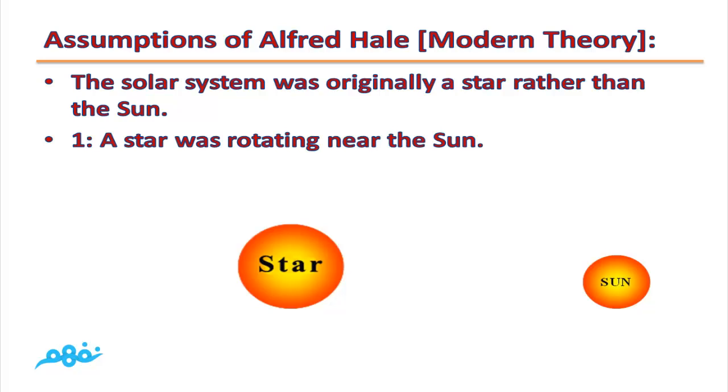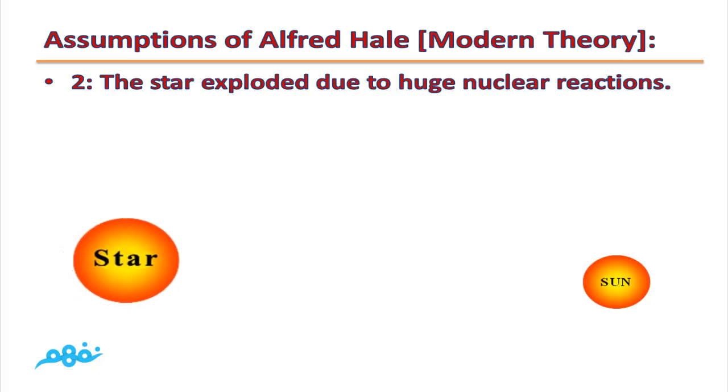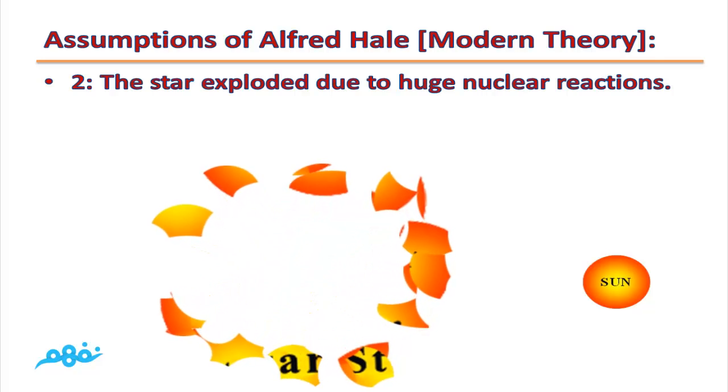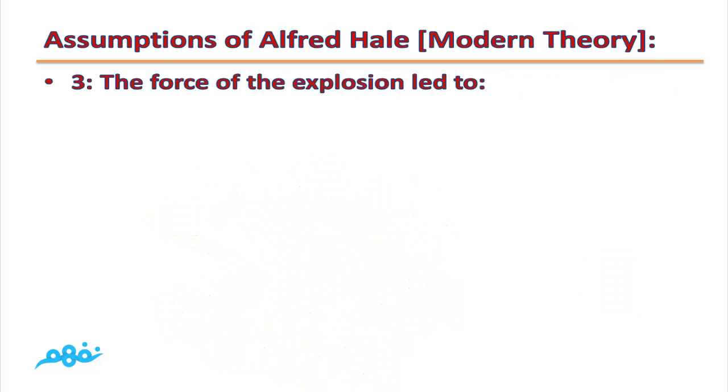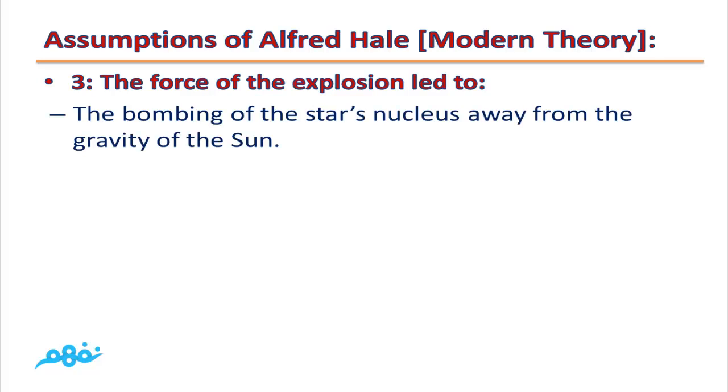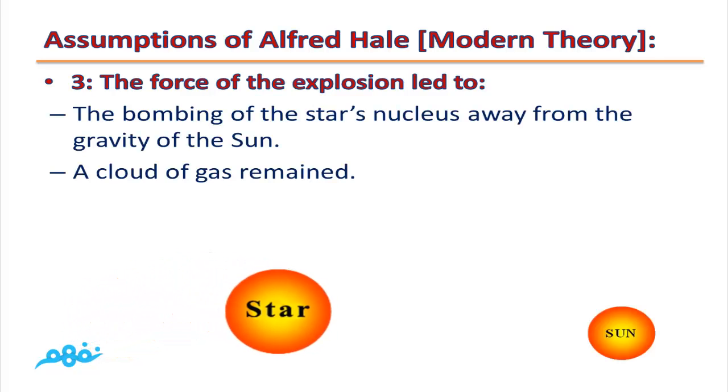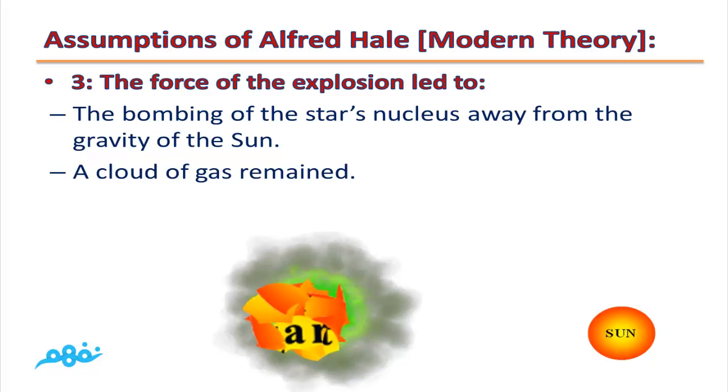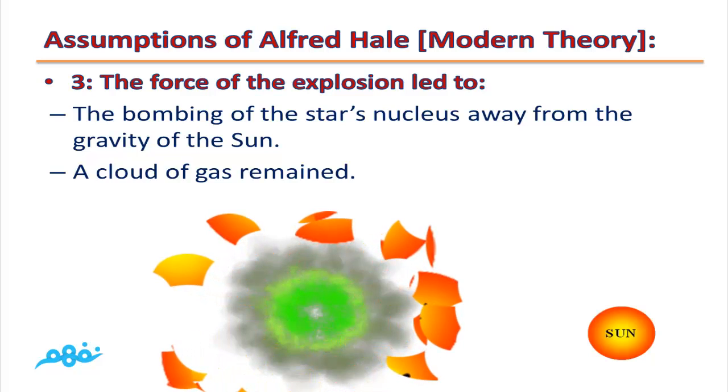This star was rotating near the sun. The star exploded due to huge nuclear reactions. The force of the explosion led to the bombing of the star's nucleus away from the gravity of the sun. A cloud of gases remained, and this is the most important part.